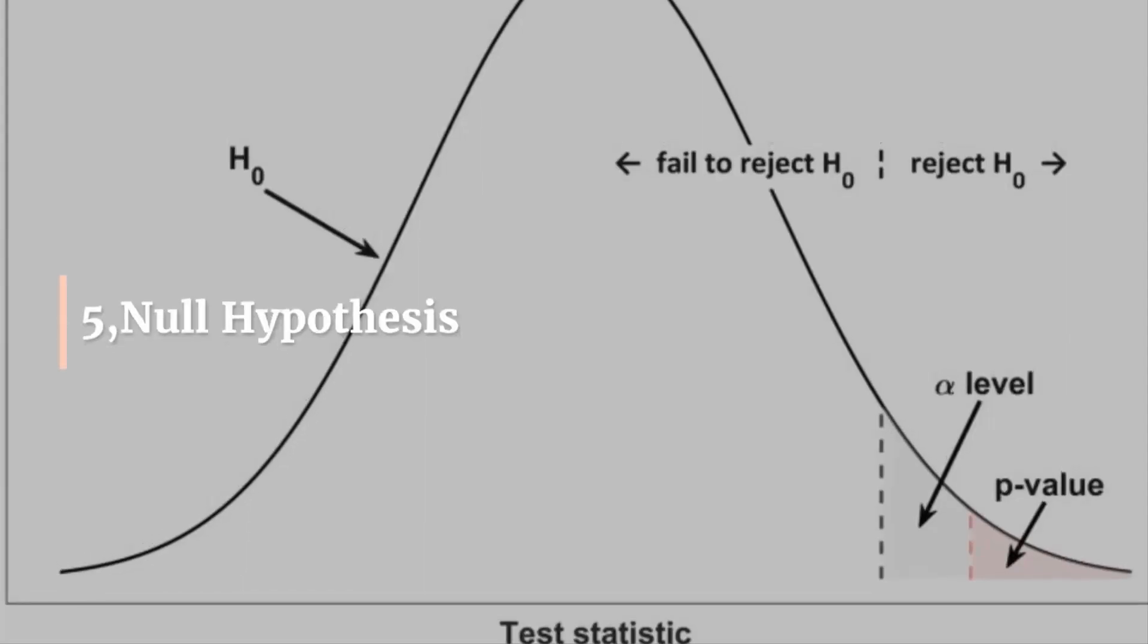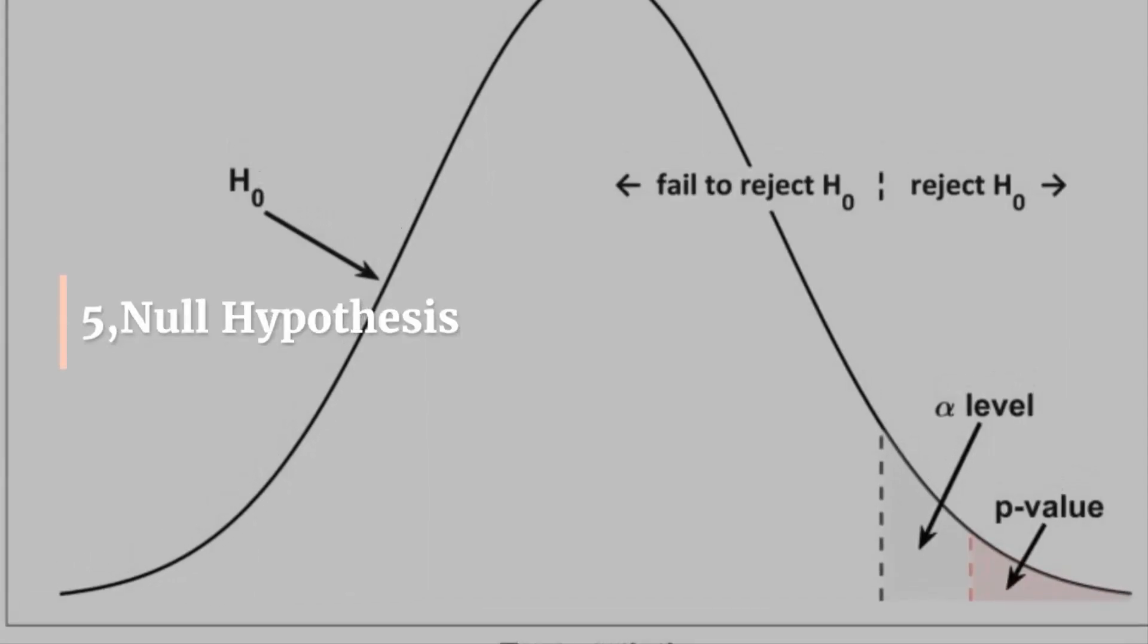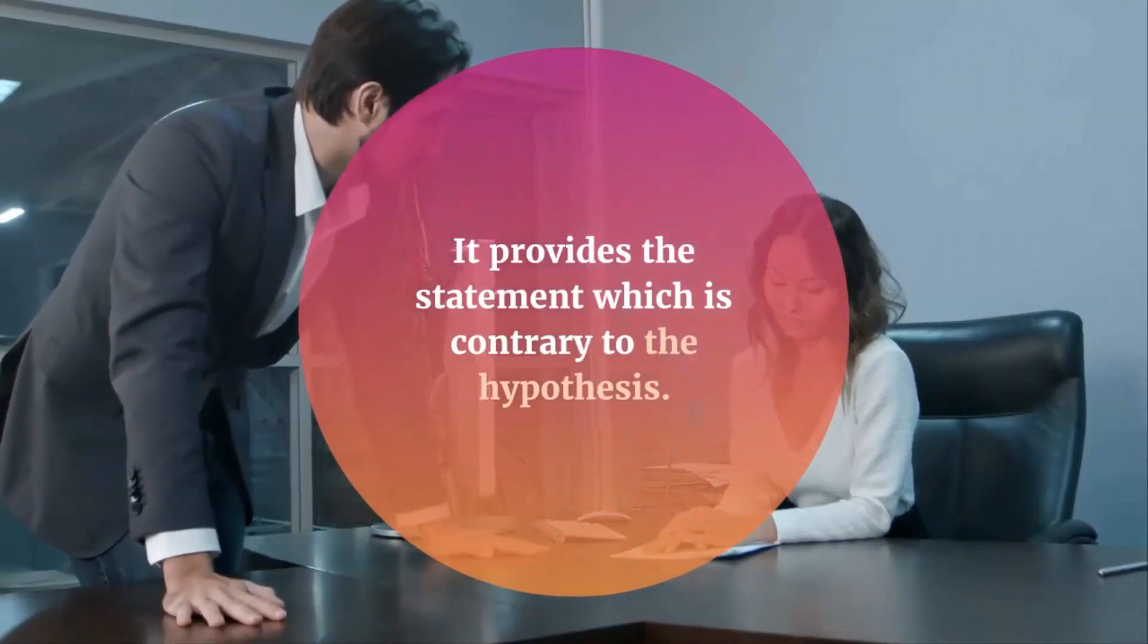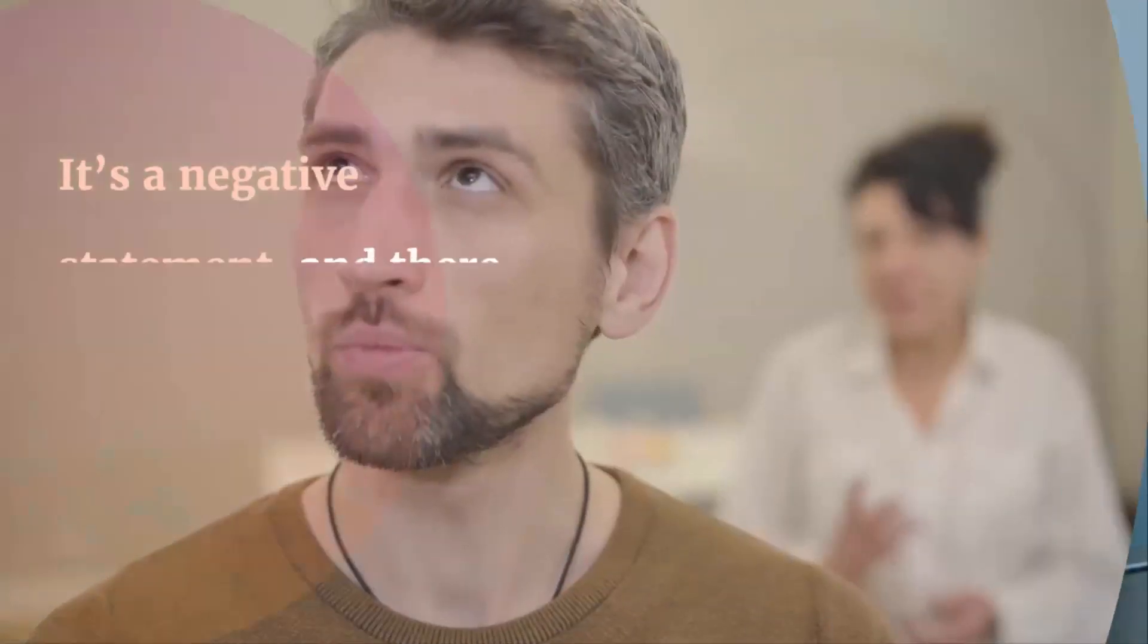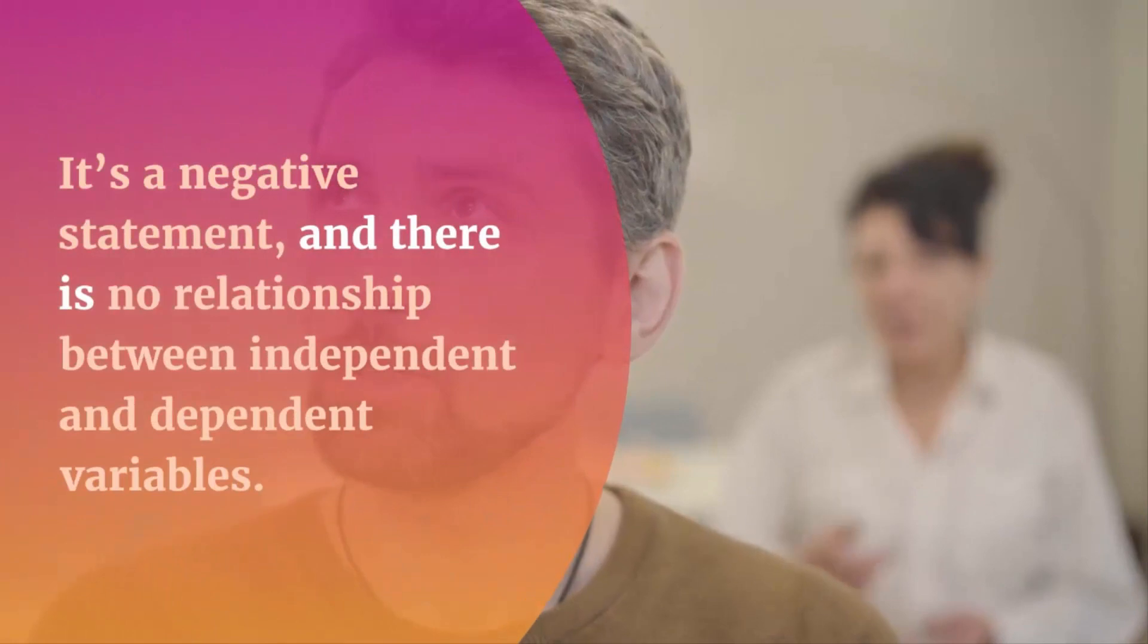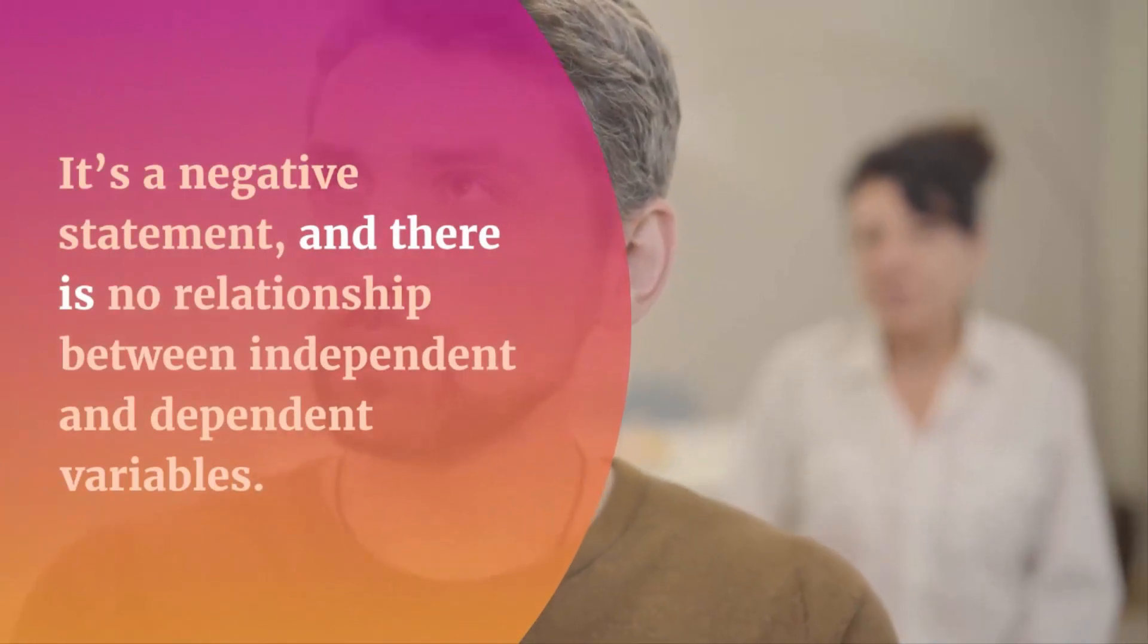5. Null hypothesis. It provides the statement which is contrary to the hypothesis. It's a negative statement, and there is no relationship between independent and dependent variables. The symbol is denoted by Ho.